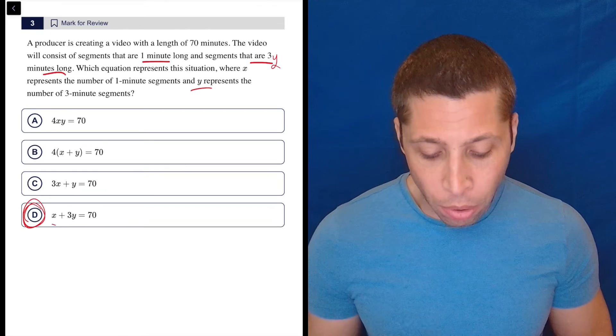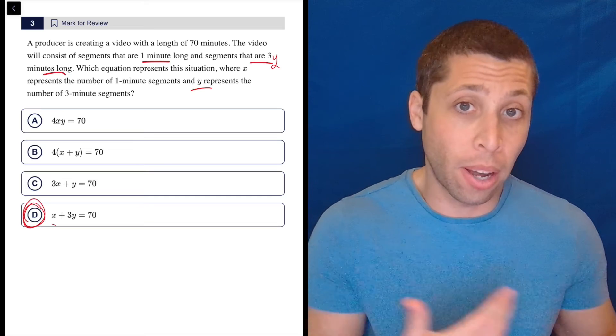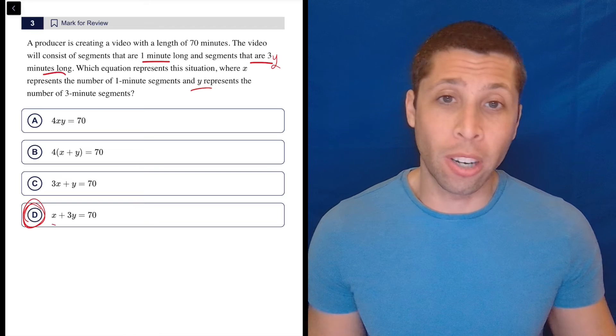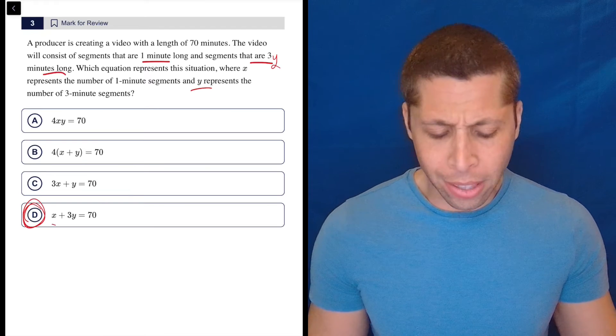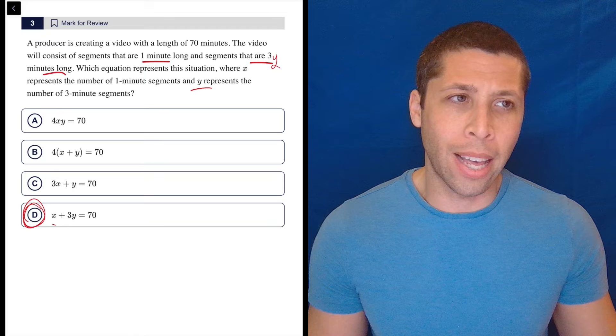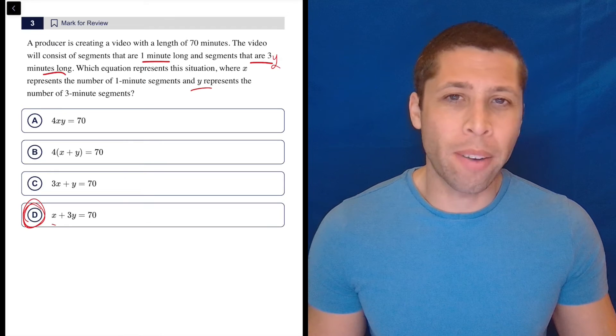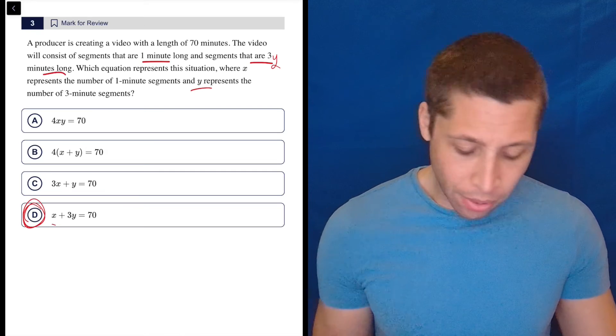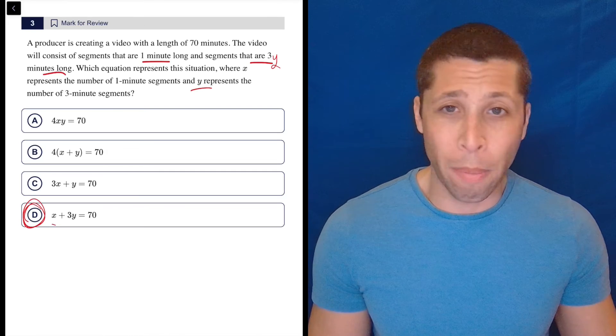And why does it equal 70? Well, the 70 is the total length of these things, so we're adding them up. This is pretty fundamental, just interpreting an equation and understanding how rates work. But I think the story is a little unusual in that it kind of almost goes out of its way to make the rates not sound like rates.